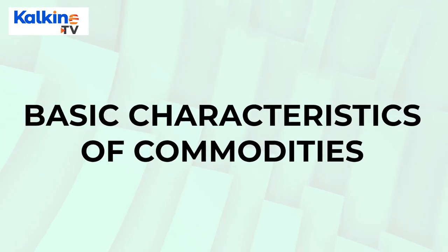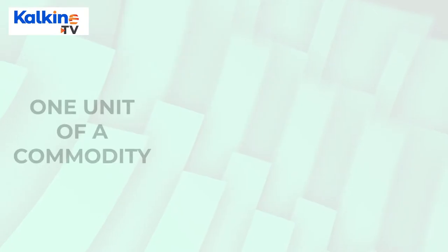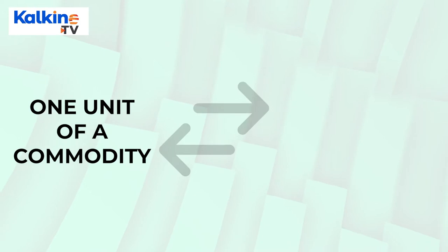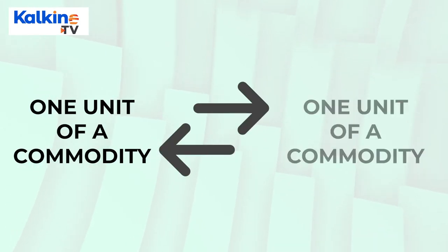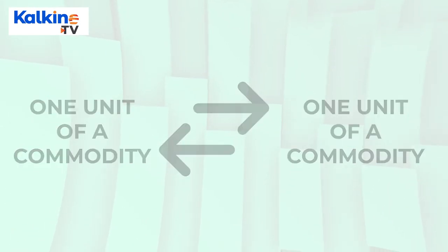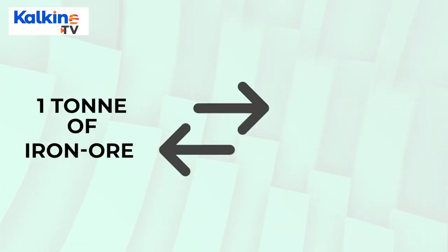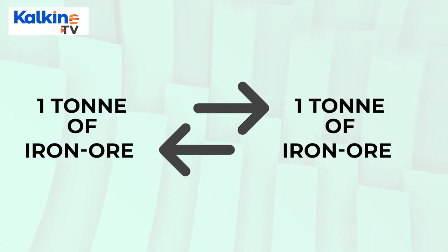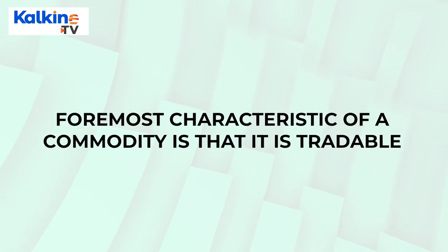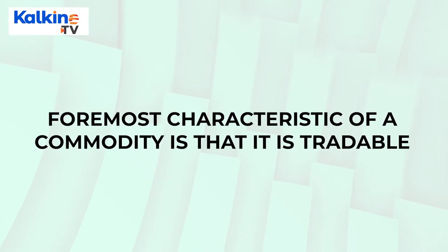Basic characteristics of commodities include: one unit of a commodity can be used or exchanged for another unit of the same commodity without any loss of value. For instance, one tonne of iron ore can be exchanged for another tonne of iron ore without any significant loss in value. The foremost characteristic of a commodity is that it is tradable. If a particular good is not tradable in the open market or an exchange, it cannot be considered a commodity.